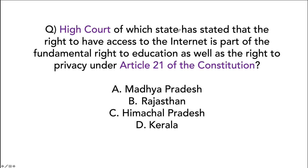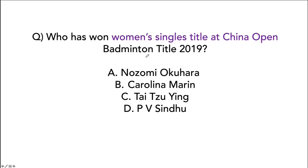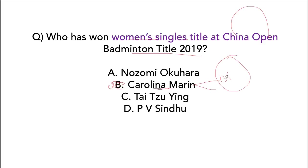The Kerala High Court has said that the right to access the internet is part of the fundamental right under the right to education and right to privacy under Article 21 of the Constitution. Who won the women's singles title at the China Open Badminton 2019? It was won by Carolina Marin of Spain — the reigning Olympic gold medalist who had defeated P.V. Sindhu in the 2016 Rio Olympics — and she defeated Tai Tzu-ying in the final.